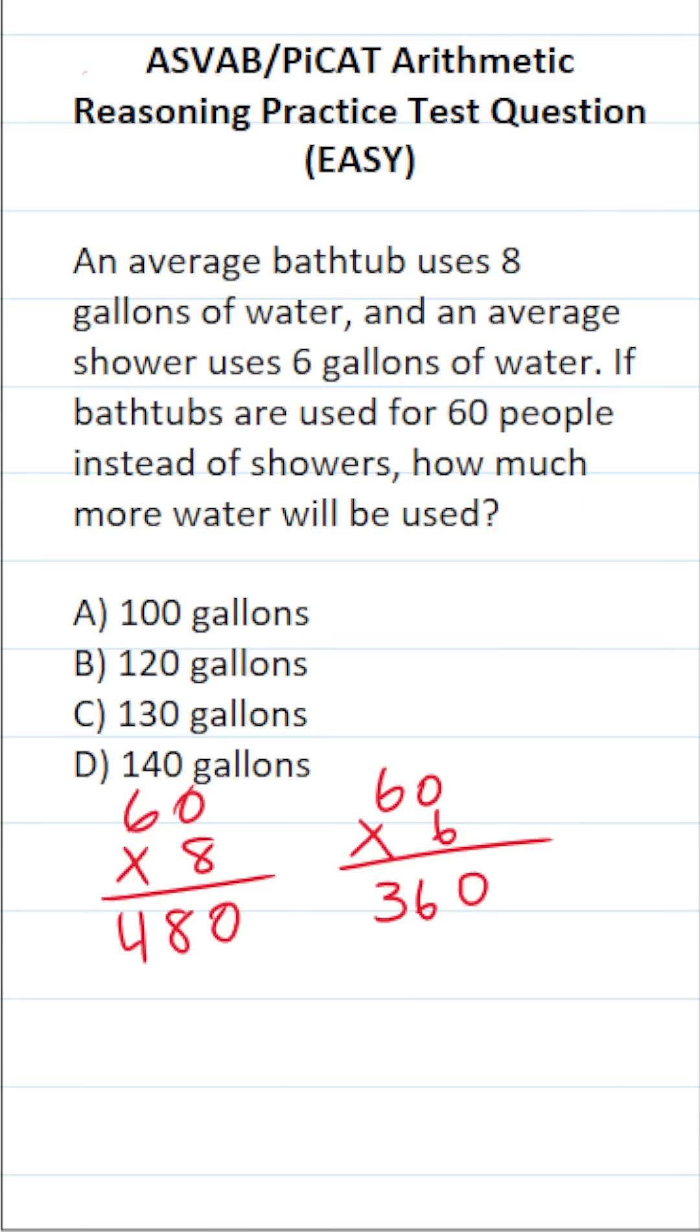So clearly, if those 60 people took baths, they would use 480 gallons of water. If they took showers, they would use 360 gallons of water. What's the difference between those two? Well, if you can't do that mentally, do it off to the side. We have 480 minus 360. 0 minus 0 is 0, 8 minus 6 is 2, 4 minus 3 is 1. So the difference is 120 gallons.